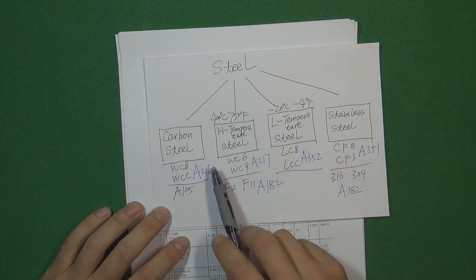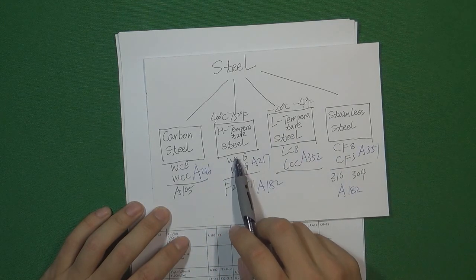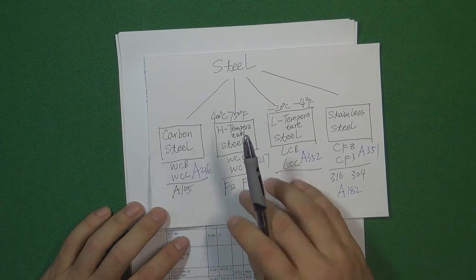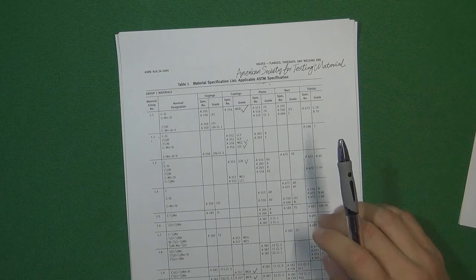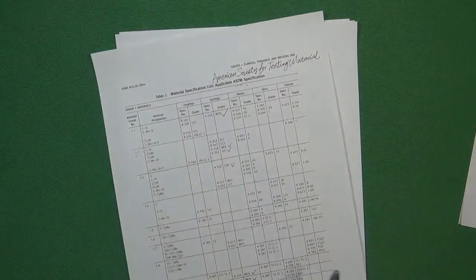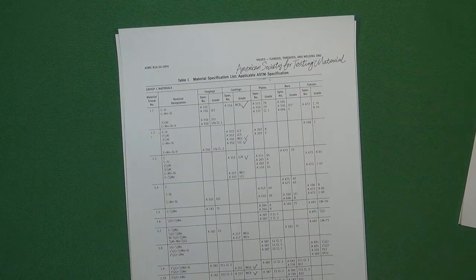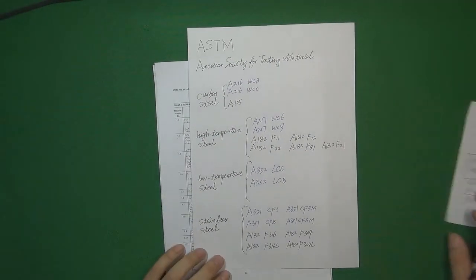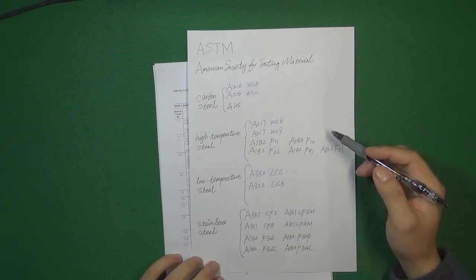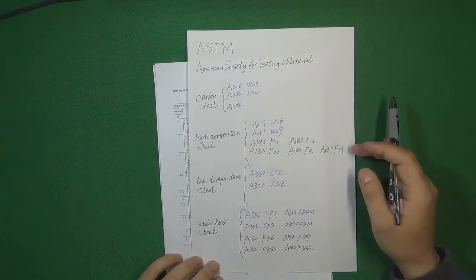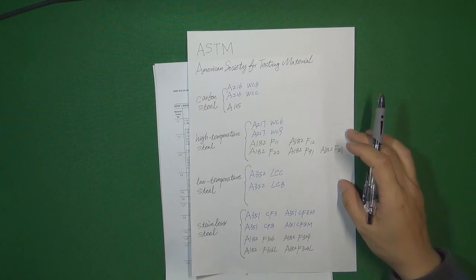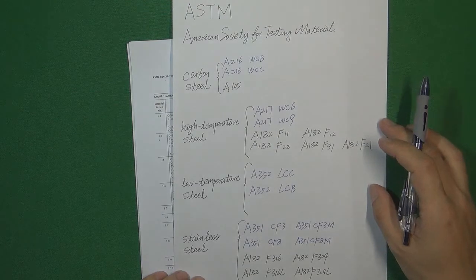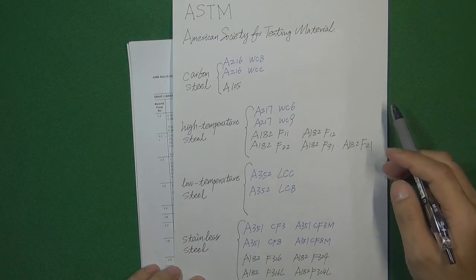If we use this approach to memorize the steel in the valve industry, that will be very easy for us. We also don't need to memorize all the steel in the material list. I've written down 20 different steels in the valve industry — I believe those 20 already cover almost all the steel commonly used. We just need to talk about those 20 different steels; that will be enough for us to understand.